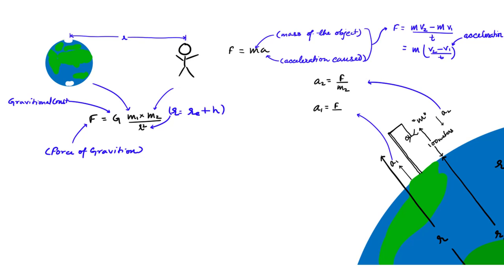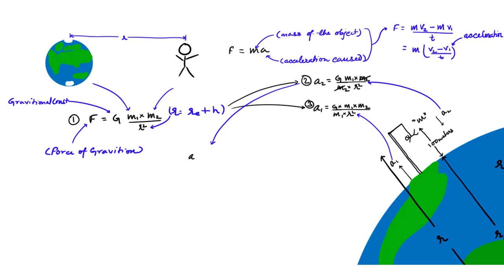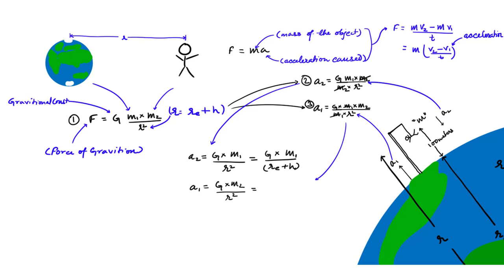The acceleration of Earth due to that force towards you equals the gravitational force divided by the mass of Earth. If we substitute F from equation one into equations two and three, we notice that your acceleration will not depend upon your mass — your mass cancels out. Your acceleration depends only on the mass of Earth and the distance between Earth's center and you.